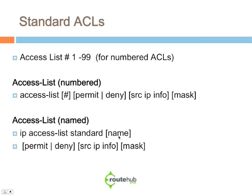For standard ACLs, numbered ACLs use any number from 1 to 99. The syntax is: access-list [number 1–99], then permit or deny, then the source IP host or subnet with the wildcard mask. For named standard ACLs, the syntax is: ip access-list standard [name]. That puts you into access-list configuration mode, where you can do a permit or deny with the source IP and wildcard mask — very similar to the numbered ACL.